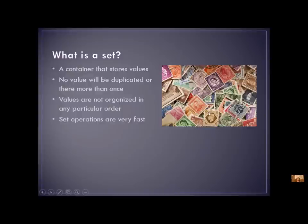You won't see the same stamp twice. In a list, you can often have the same value and you can even have a list of all the same values. But in a set, no value will be duplicated. Also, the values are not organized in any particular order. You know in a list that there's an index and you know exactly where an element is and you can access it by position, but there is no position in a set.